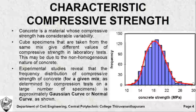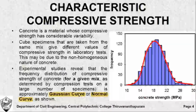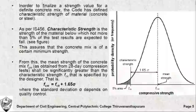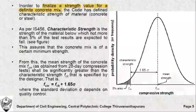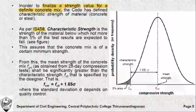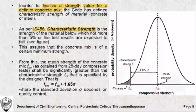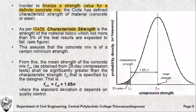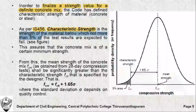This bell-shaped distribution is known as the normal distribution curve, otherwise known as the Gaussian curve. In order to finalize the strength value for a definite concrete mix, the Indian standard code IS 456 has defined what is known as the characteristic strength of material. By characteristic strength we mean the strength of material below which not more than 5% of the test results are expected to fall.